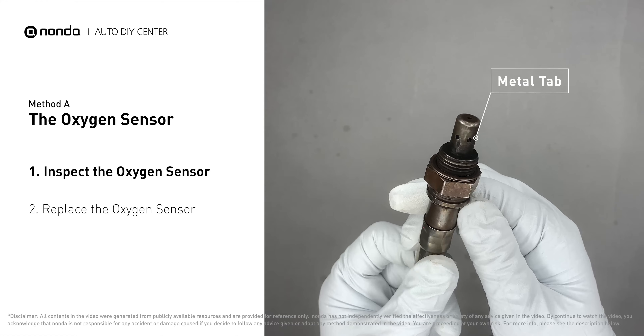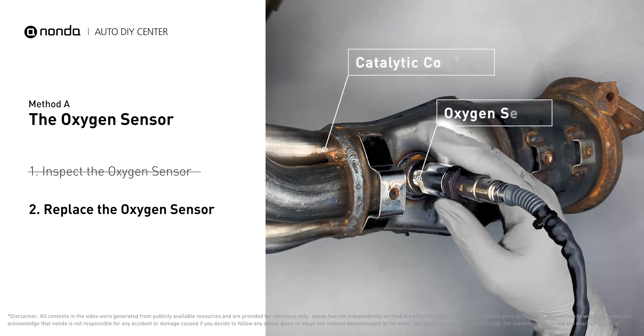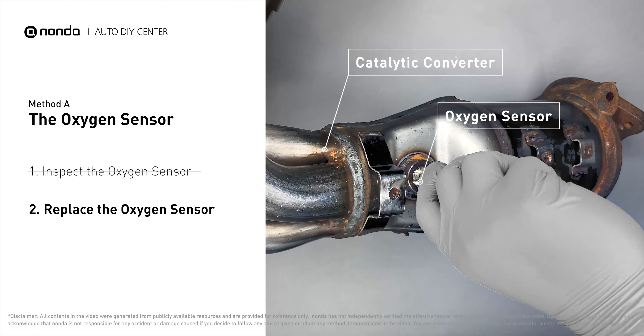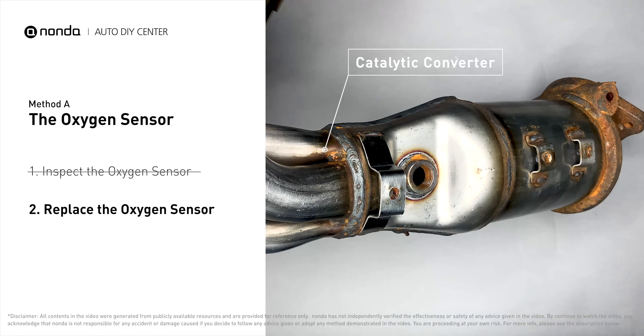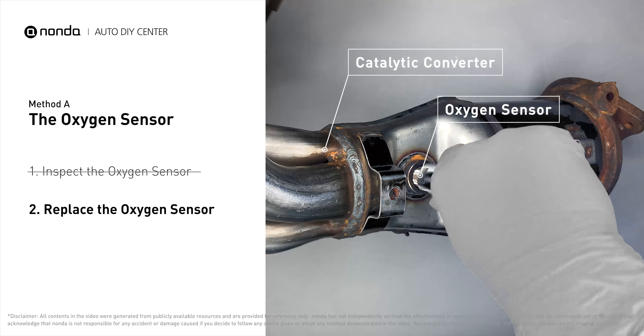Visually check the oxygen sensor's electrical connections, wire harness, and metal tabs for any damages. If damages are found, then replace the oxygen sensor.